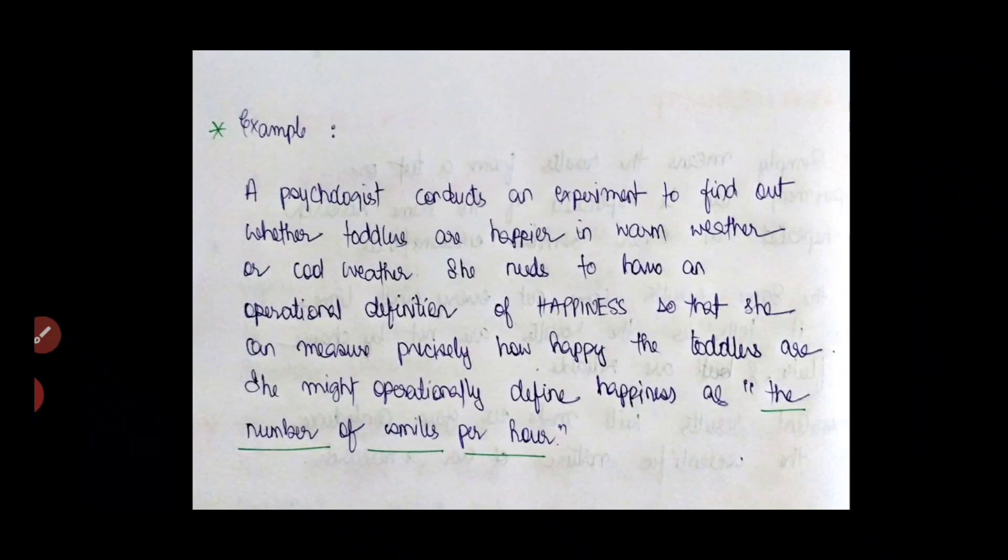She needs to have an operational definition of happiness first so that she can measure precisely how happy the toddlers are. She might operationally define happiness as the number of smiles per hour. So this is what we mean by precision in a scientific method or research. You are supposed to define the terms that you're using. You're supposed to define the concepts that you're using. They should have specific outlines to avoid confusions and errors. So here you'll notice that the psychologist is being very precise with the terms that she's using, with the concepts that she's using. The lines should be drawn very clearly.